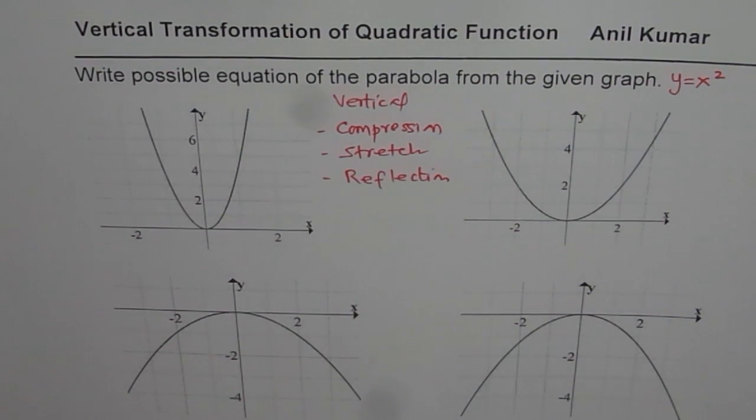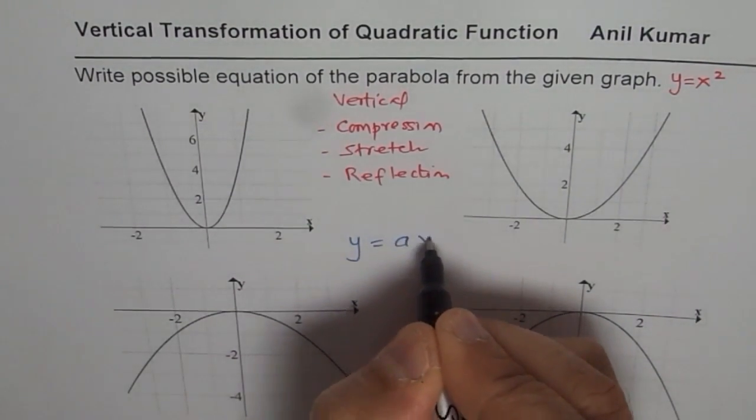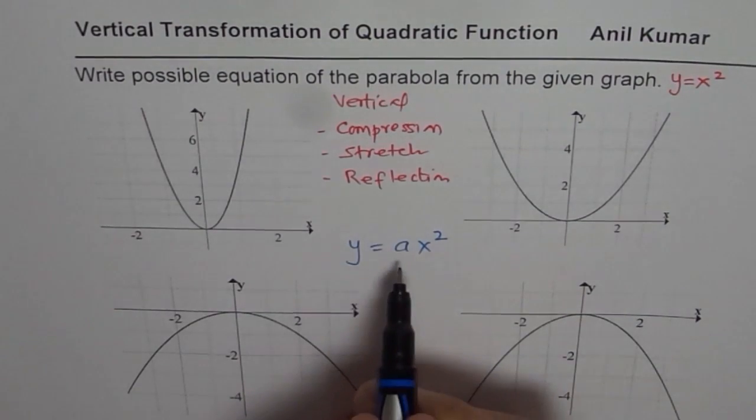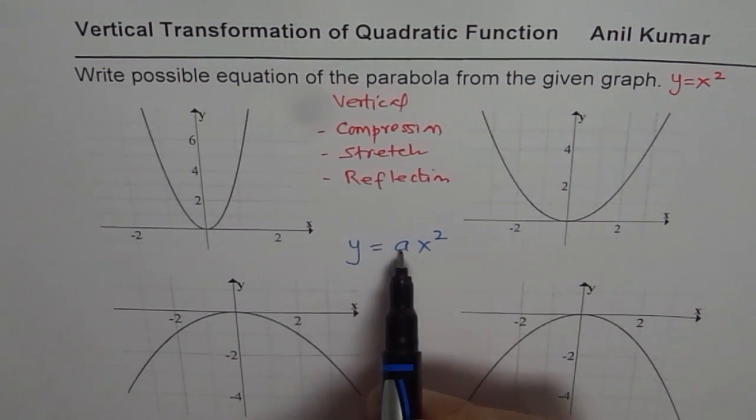In general, the equation is y equals to ax squared. That is the general equation. If a is negative, there is reflection on x-axis. If a is greater than 1, it is vertically stretched.